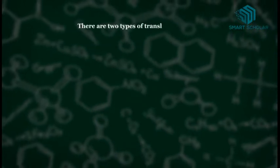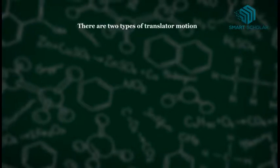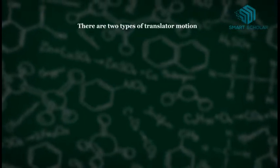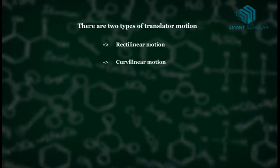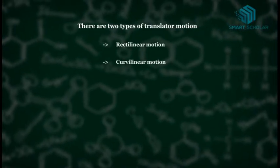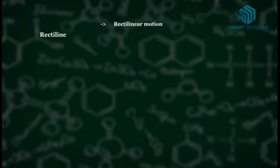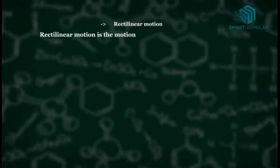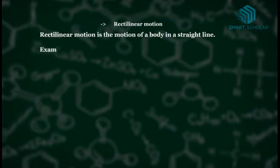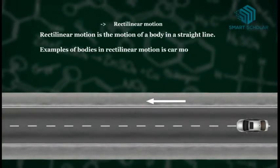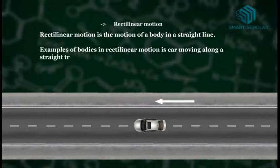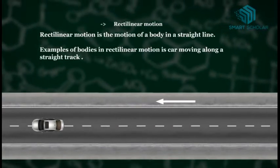There are two types of translatory motion: rectilinear motion and curvilinear motion. Rectilinear motion is the motion of a body in a straight line. An example of rectilinear motion is a car moving along a straight track.